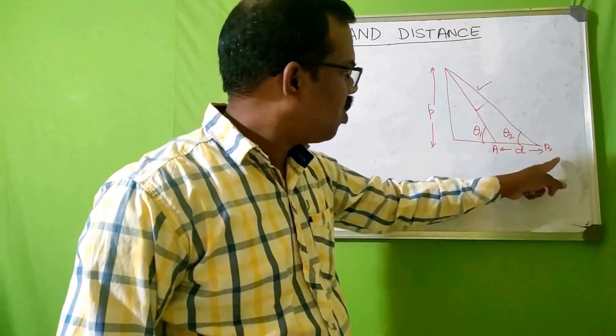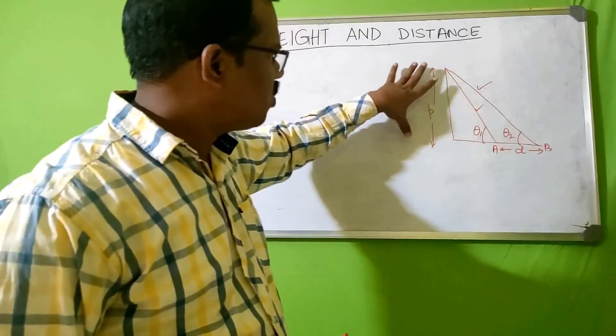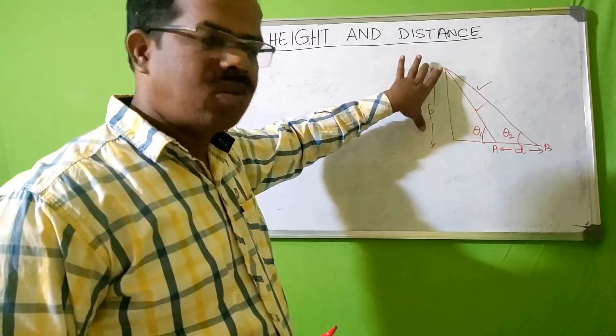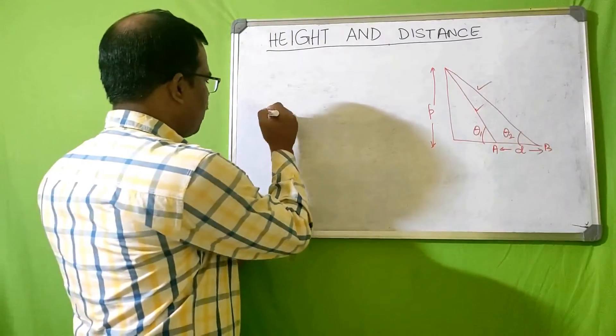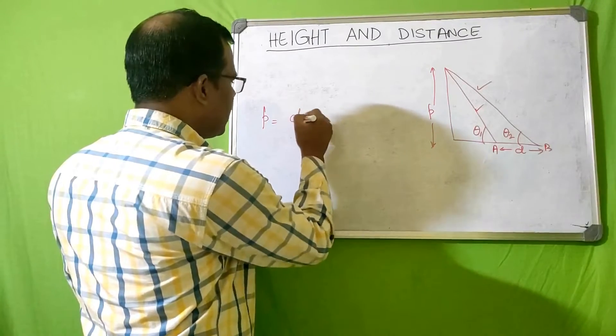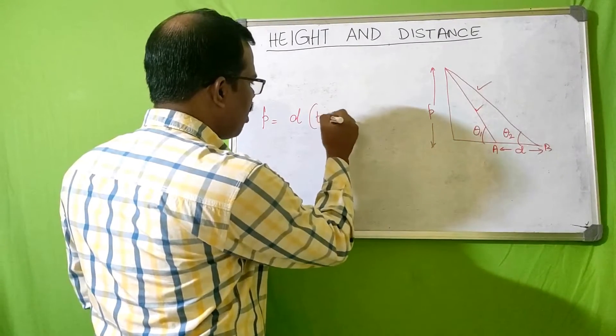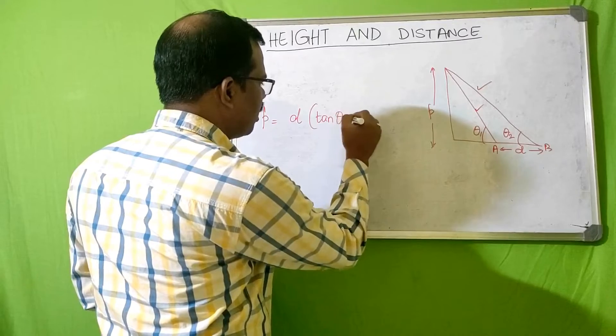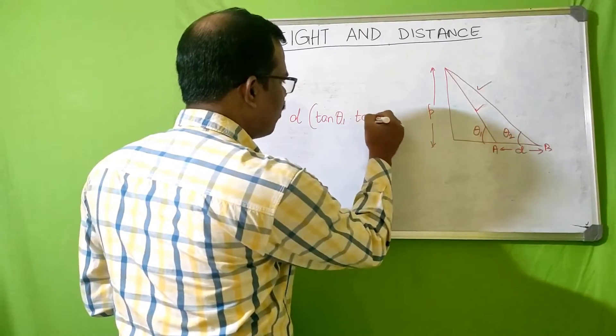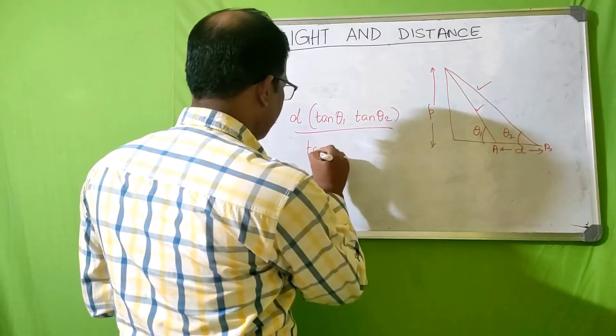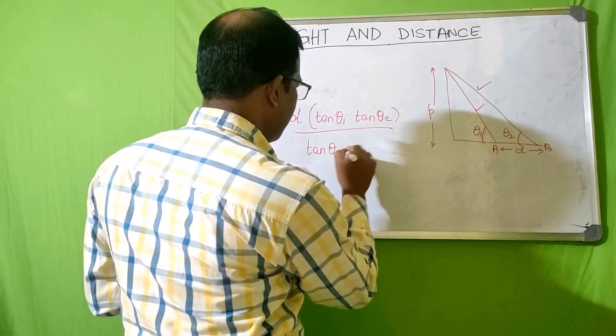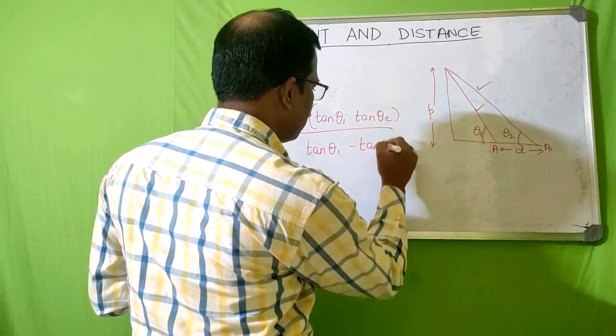And you are asked to find out the perpendicular. Then you apply this formula: the perpendicular will be equal to d into tan of theta one into tan of theta two divided by tan of theta one minus tan of theta two.